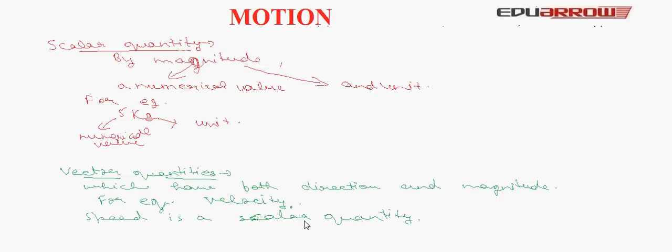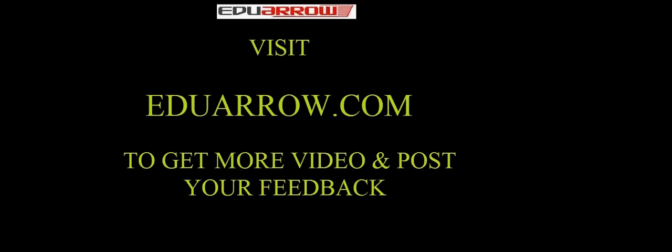When we say a velocity of 2 m/s it is incomplete. We have to specify the direction, whether it is north, south, east, west, or whether it is at any angle with something. We have to specify it because it is a vector quantity.